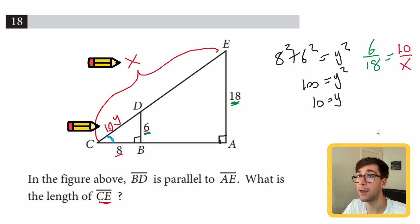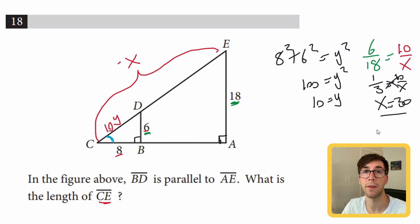First thing I'll do is reduce this fraction to 1 over 3. That'll be 1 over 3 equals 10 over x. Then we'll cross multiply and we get x equals 30. Our answer is 30.